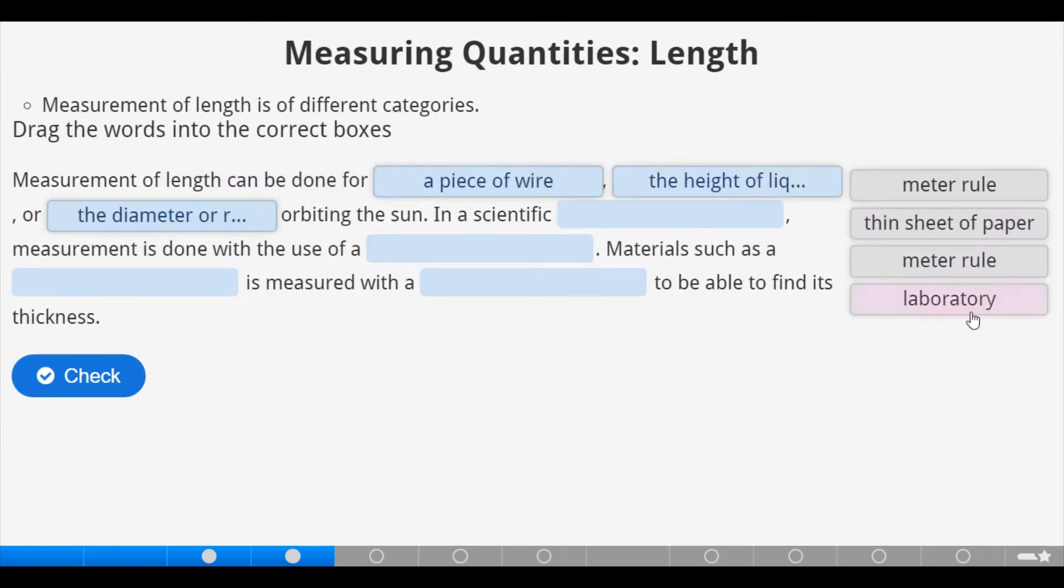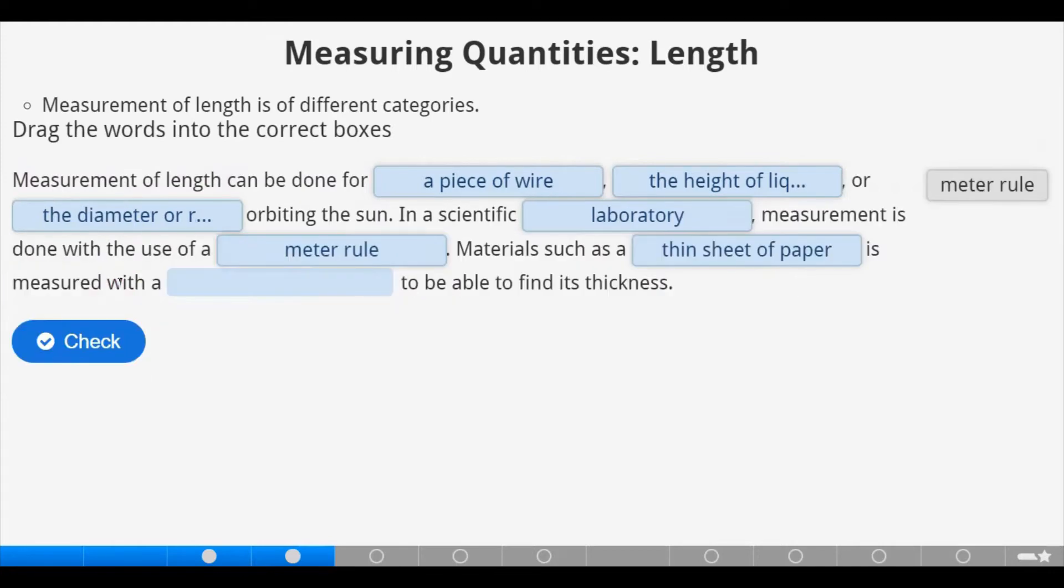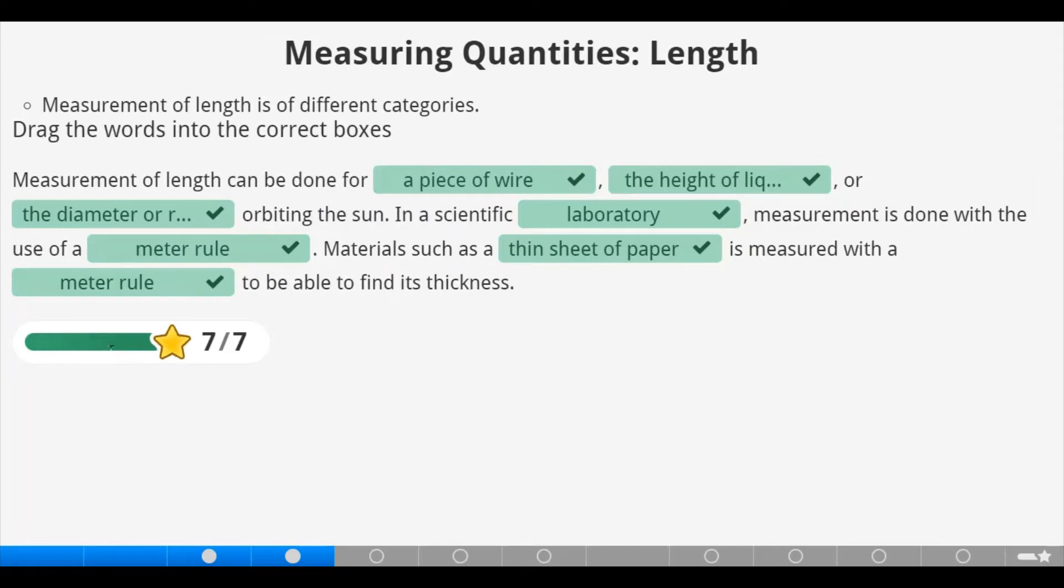The height of liquid in a tube or the diameter or radius of a planet orbiting the sun. In a scientific laboratory, measurement is done with the use of a metal rule. Materials such as a thin sheet of paper is measured with a metal rule to be able to find its thickness. Let's check and it's correct.